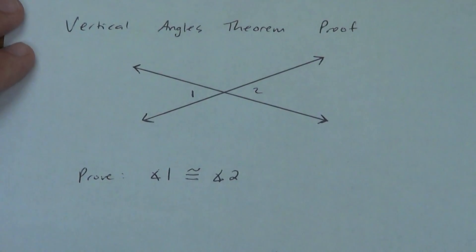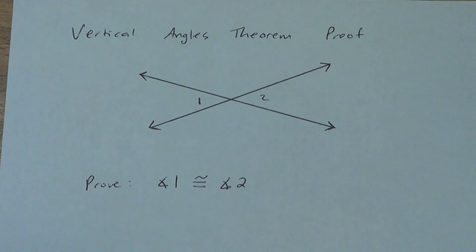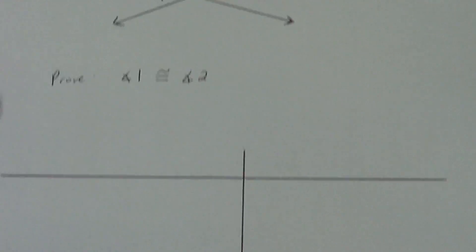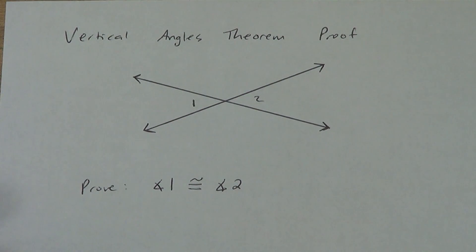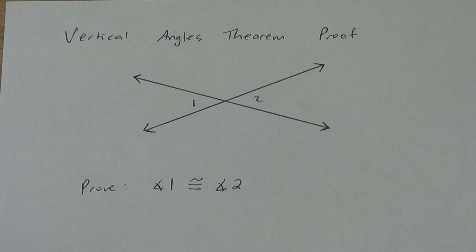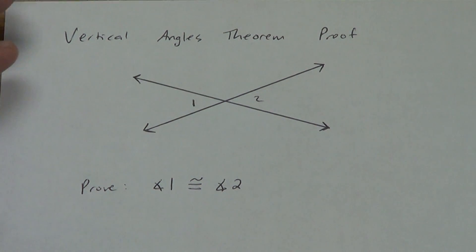We're going to do one more proof — we're going to prove the Vertical Angles Theorem. Go ahead and copy that picture down. We're going to prove that angle one and angle two are congruent. Get your two-column proof ready — statements and reasons. For this one, we're going to have to add in one more angle; I'm going to call it angle three. You can put it at the top or bottom — it doesn't really matter.